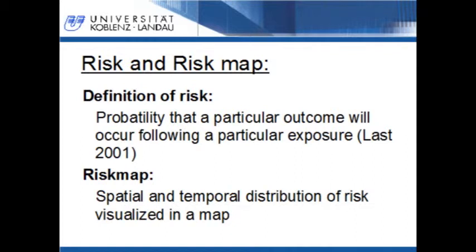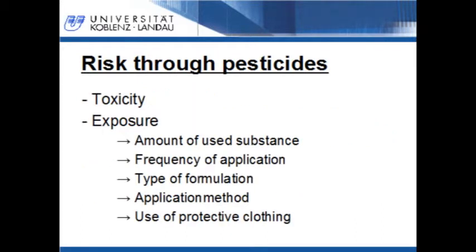Risk maps visualize the spatial and temporal risk to human health. In the following slides, I will refer to pesticide-induced risks and risk maps. The pesticide-induced risk is defined by two factors: the toxicity of a substance and the exposure to the substance. In the case of pesticides, the exposure can be assessed by different factors: the amount of the used substance, the frequency of the application, the type of the pesticide formulation, the application technique, and the use of protective clothing.